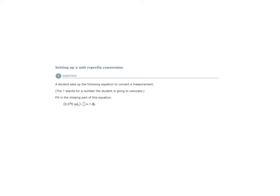Setting up a unit re-prefix conversion. A student sets up the following equation to convert a measurement. The question mark stands for a number the student is going to calculate, filling the missing part of this equation. So we have 0.070 milliliters times something equals something or a certain number of deciliters.